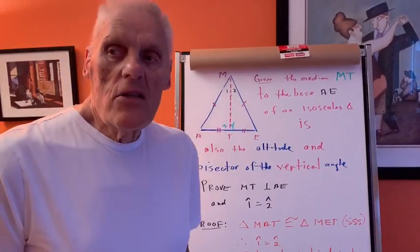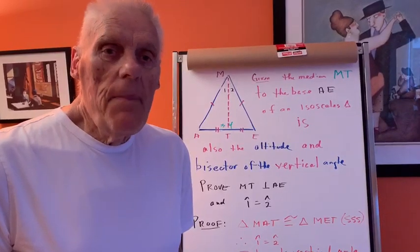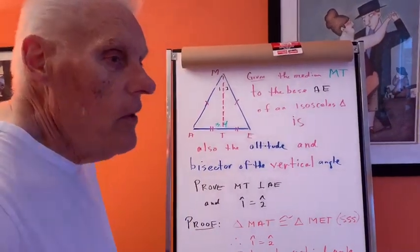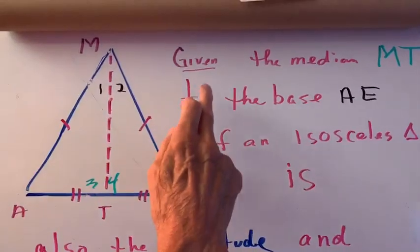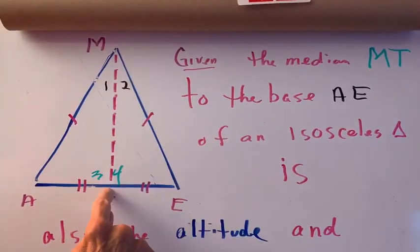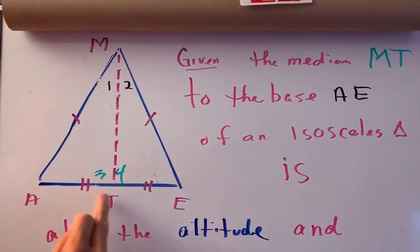Okay, this is a nice isosceles triangle. We call this the properties of an isosceles triangle. And if you look closely at it, we are given the median MT to the base AE.